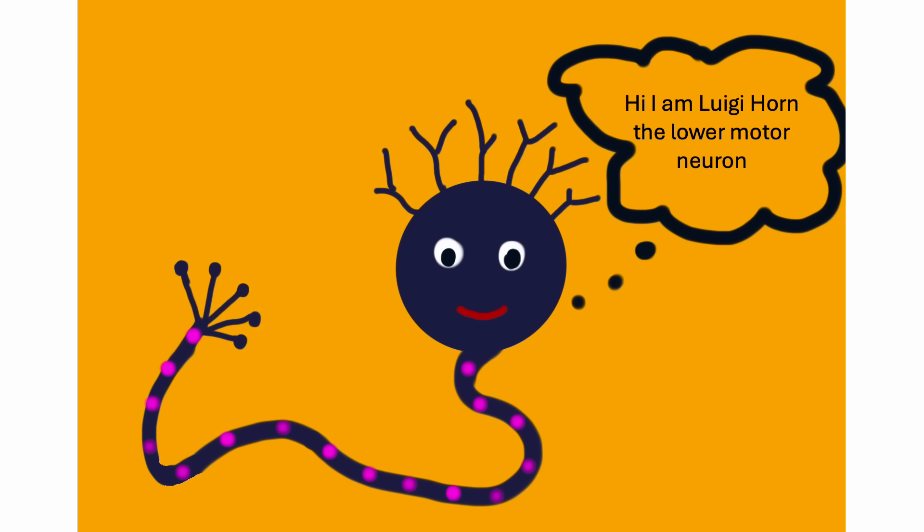Hi, I am Luigi, the lower motor neuron. I am an anterior horn cell. My dendritic hairs receive information from sensory neurons, interneurons, and descending pathways from the brain and brainstem, including the lateral corticospinal tract.